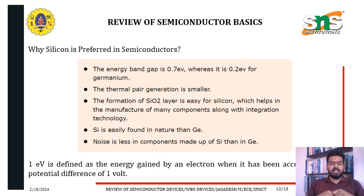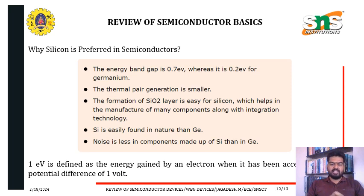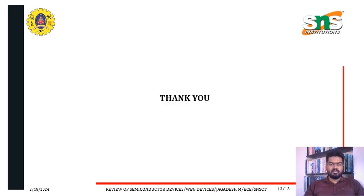Silicon is preferred in semiconductors for several reasons: its energy band gap is 1.1 eV compared to 0.7 eV for germanium; thermal pair generation is smaller; the formation of the SiO2 layer is easy, which helps in manufacturing many components with integration technology; silicon is more easily found in nature than gallium or germanium; and noise is less in components made of silicon than germanium.